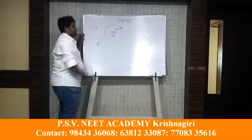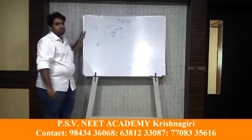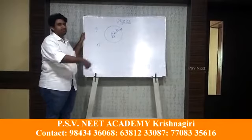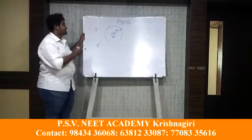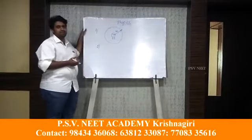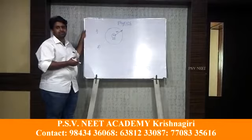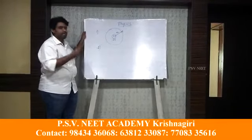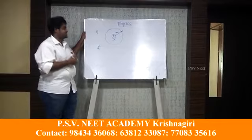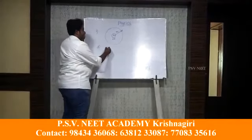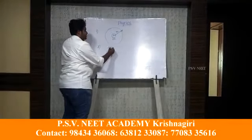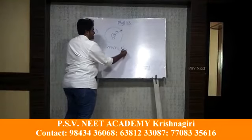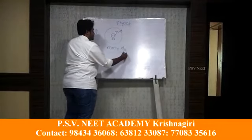Coming to the second postulate: when the electron is moving in an orbit, Bohr's consideration is that the angular momentum of the electron will remain conserved and will always be in a quantized state. So we can write the angular momentum mvr as always quantized, equal to nh upon 2π.